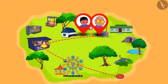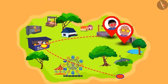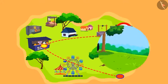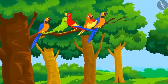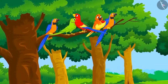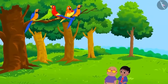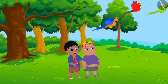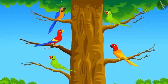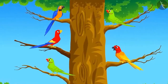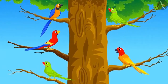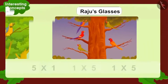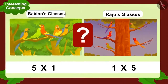Bablu and Raju were very excited seeing the multiplication magic of their glasses. They didn't realize that they had reached the park. In the park, five birds were sitting on a branch of a tree. This time, Bablu looked at the tree through his glasses first and saw this multiplication. Suddenly, the birds flew and now there was one bird on five separate branches. Raju wore his glasses and looked at the tree and saw this multiplication. Did Raju see the same number of birds as Bablu?